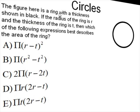The figure here is a ring with a thickness shown in black. So there's a circle and then it's empty in the middle. If the radius of the ring is R and the thickness of the ring is T, then which of the following expressions best describes the area of the ring?